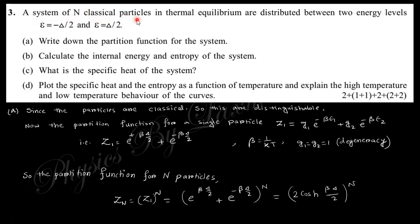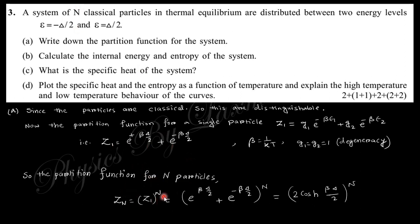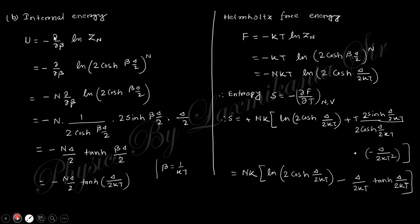The next question: a system of N classical particles in thermal equilibrium distributed between two energy levels −Δ/2 and +Δ/2. Find the partition function, internal energy, entropy, specific heat, and plot C_v and entropy versus temperature, explaining high-T and low-T behavior. Since the particles are classical (distinguishable), the single-particle partition function is Z₁ = e^(+βΔ/2) + e^(−βΔ/2) = 2cosh(βΔ/2), and for N particles Z_N = Z₁^N.